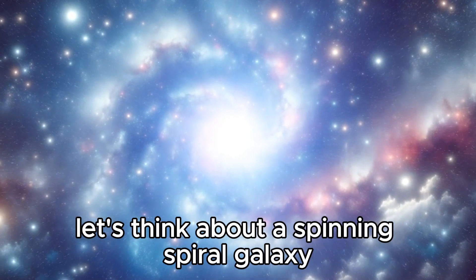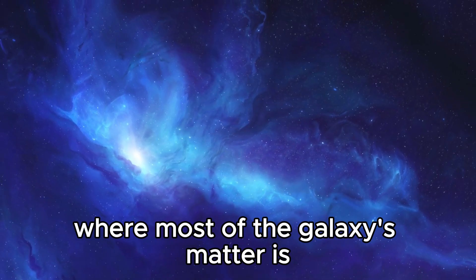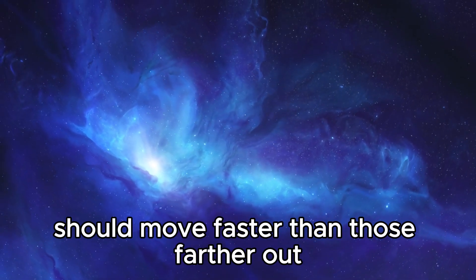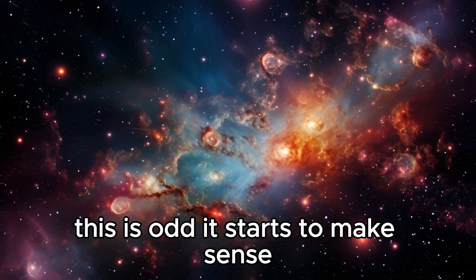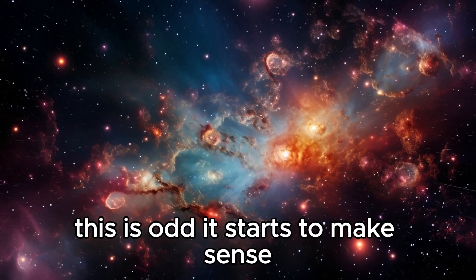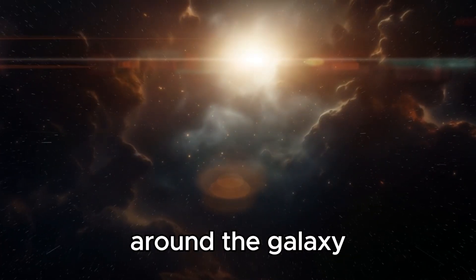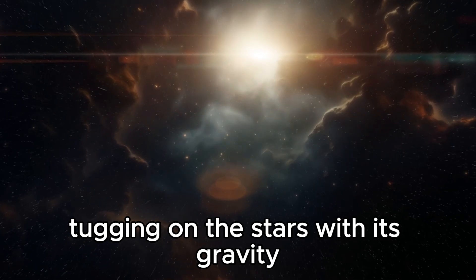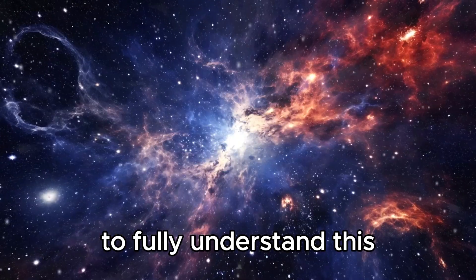Let's think about a spinning spiral galaxy. Stars near the center, where most of the galaxy's matter is, should move faster than those farther out. But when we look, they all move at about the same speed. This is odd. It starts to make sense if we imagine there's this invisible mass of dark matter around the galaxy, tugging on the stars with its gravity. Some scientists think we might need to rethink how gravity works to fully understand this.